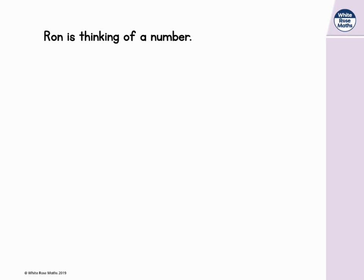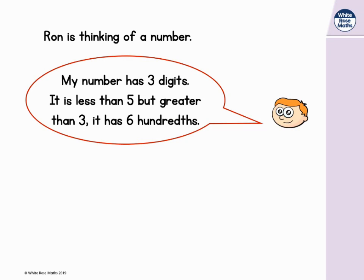Let's look at our next example. Ron is thinking of a number. He says my number has three digits. It is less than five but greater than three. It has six hundredths. What number could Ron be thinking of?